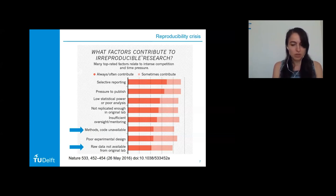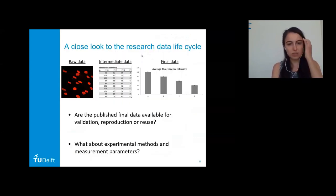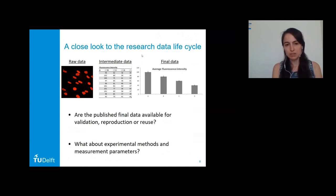When we think about what factors contribute to irreproducible research, we see things like selective reporting, pressure to publish, and low statistical power — but also methods and code being unavailable and raw data not being available from the original lab. To better understand this, it's a good idea to take a closer look at the research data life cycle.